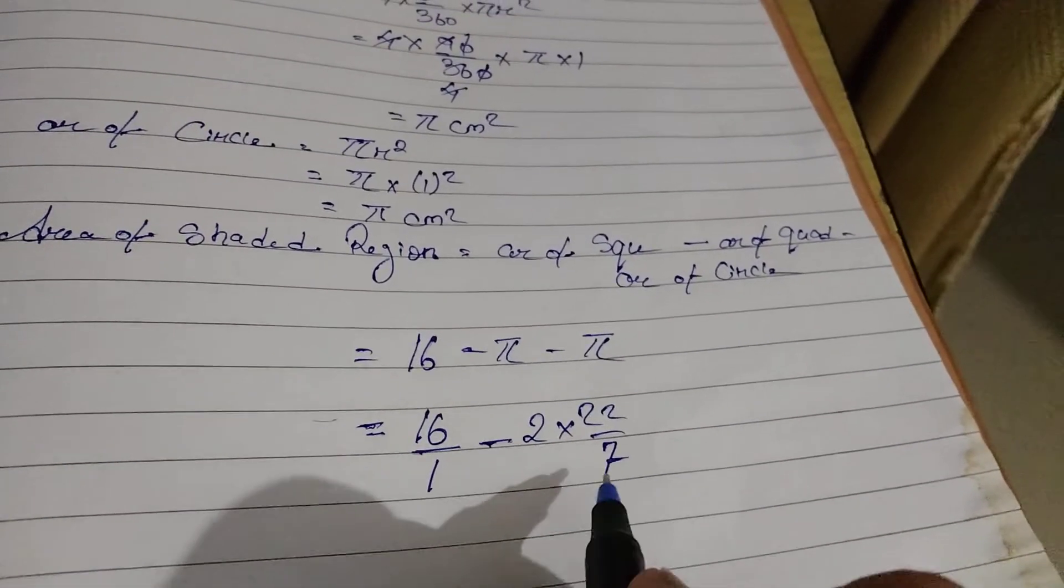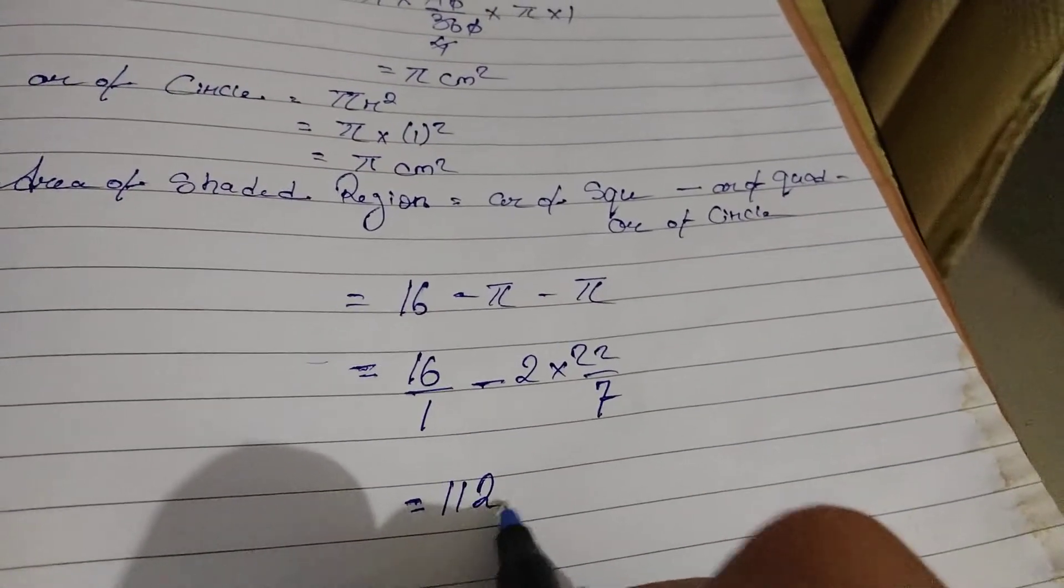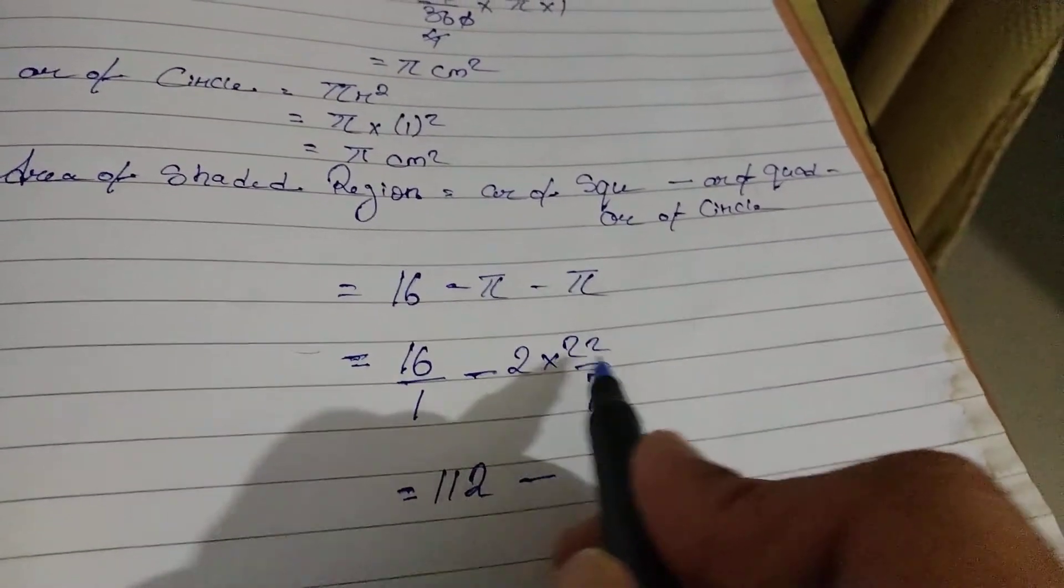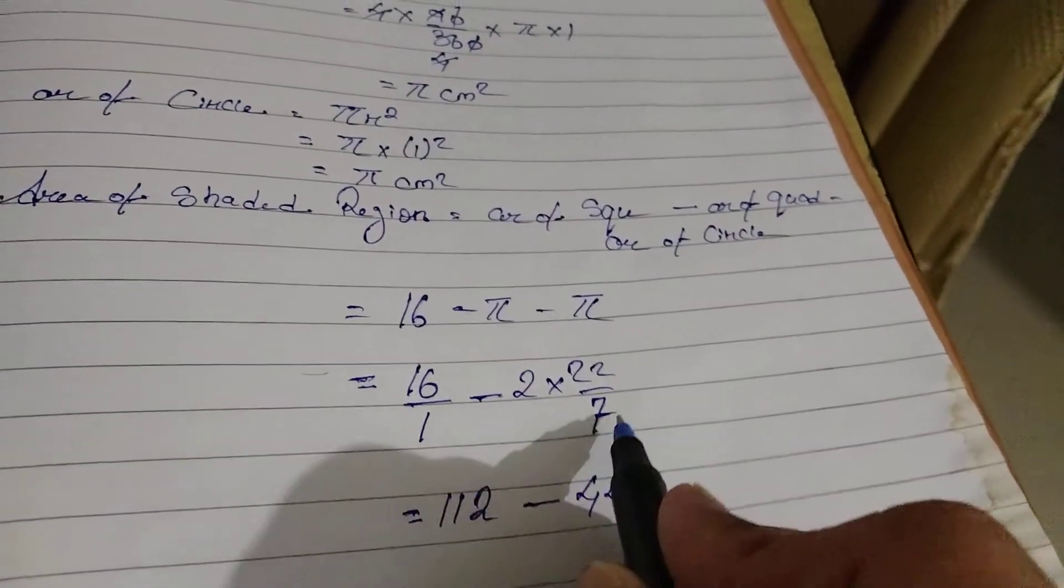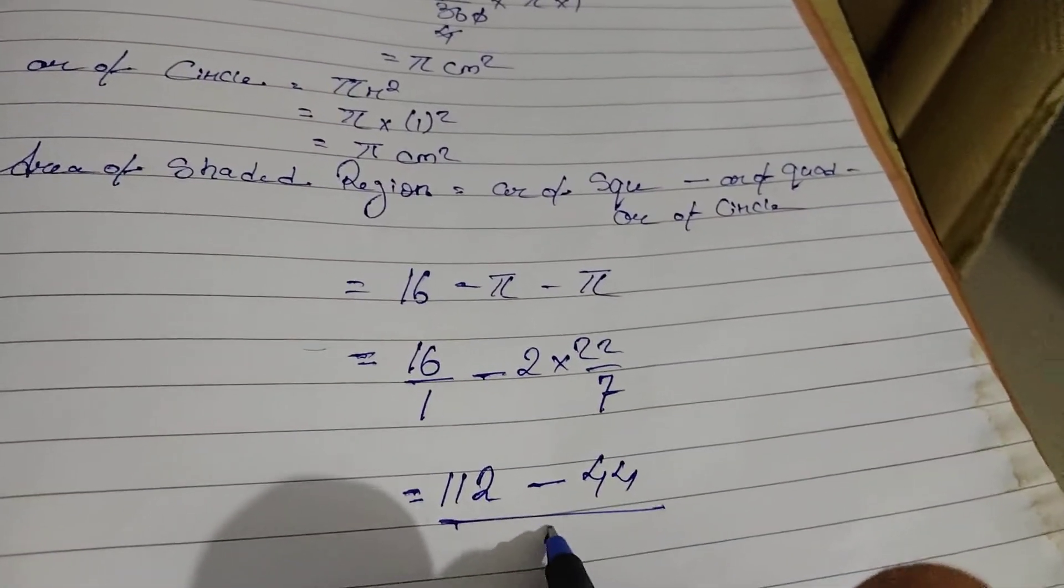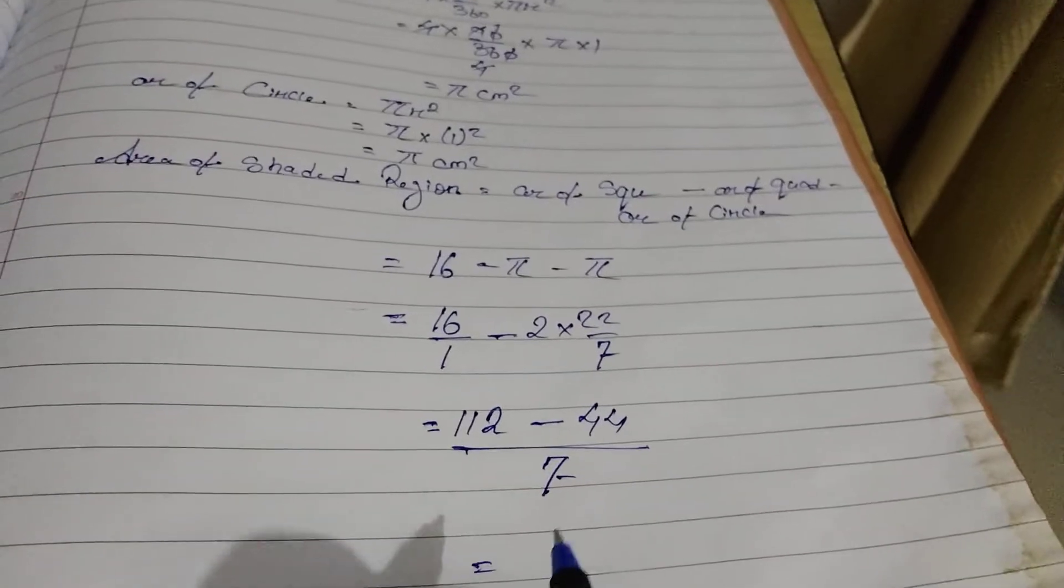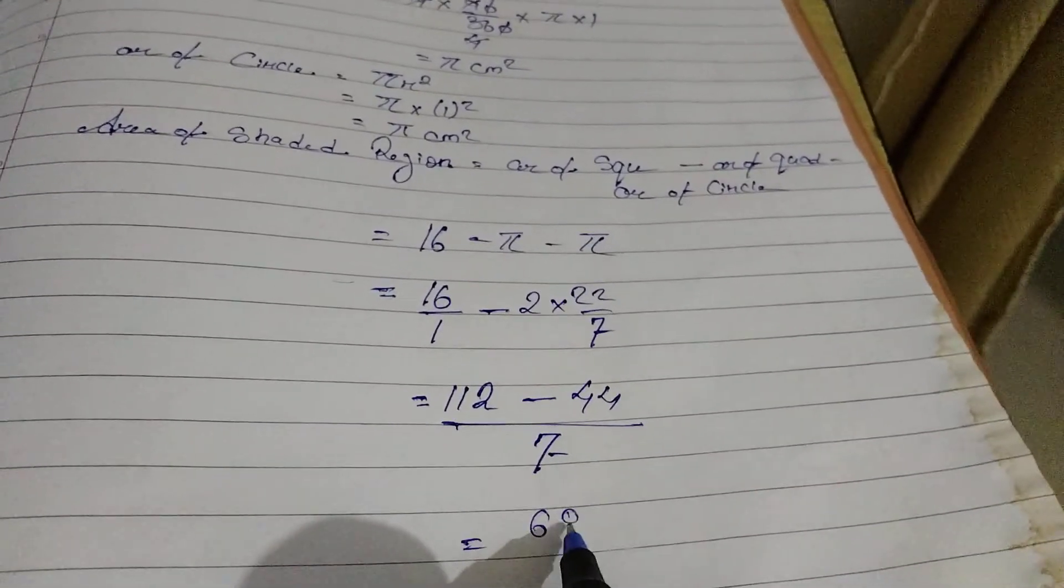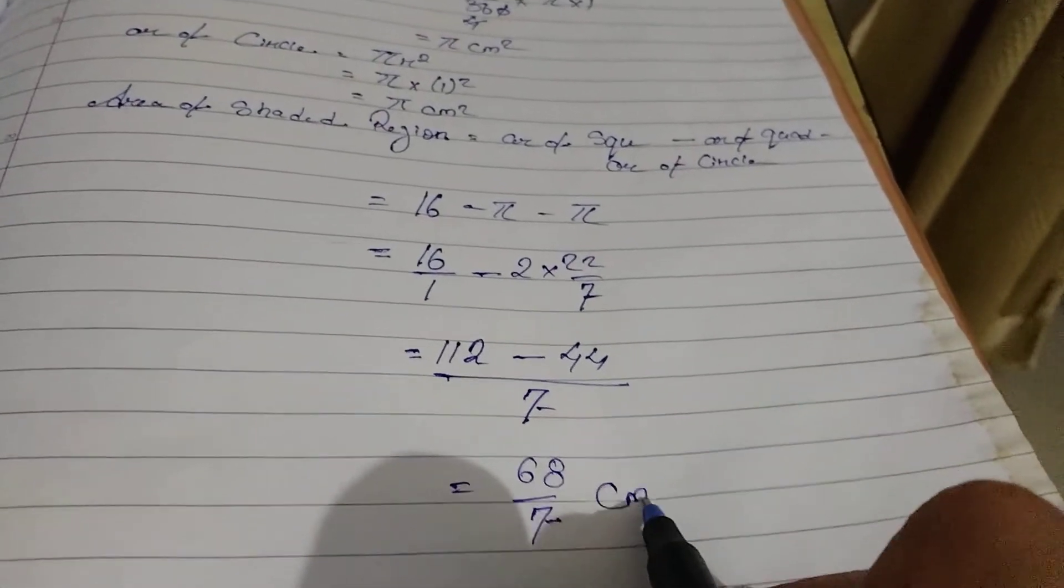So, 16 into 7 is 112, minus 22 into 2 is 44, denominator 7. LCM of 1 and 7 is 7. So, 112 minus 44 is 68 by 7 centimeters square.